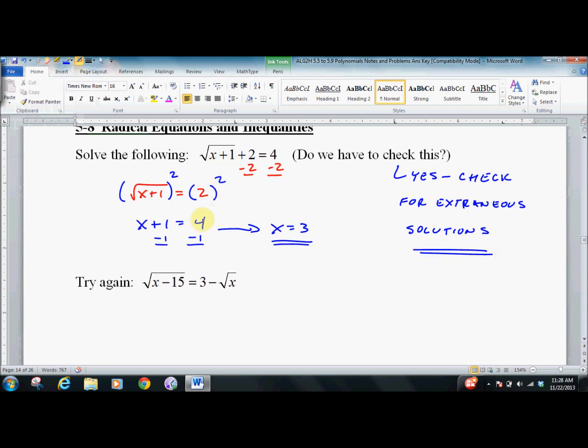3 worked. 3 plus 1 is 4. Square root of 4 plus 2 is 2 plus 2. 4 equals 4. It worked.